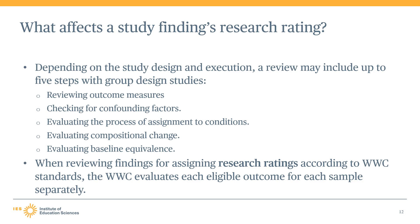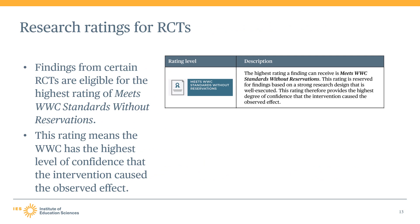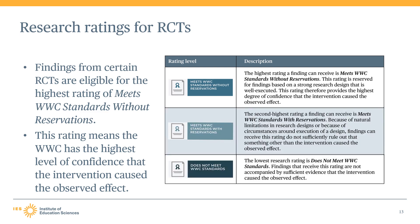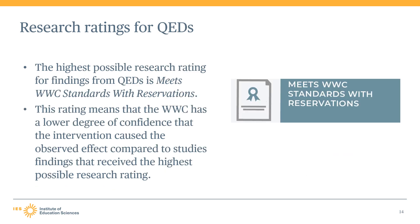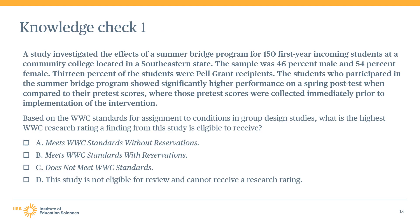When reviewing findings for assigning WWC research ratings, the WWC evaluates each eligible outcome for each sample separately. Findings from randomized controlled trials are potentially eligible to receive the highest rating of meets WWC standards without reservations. This research rating means that the WWC has the highest level of confidence that the intervention caused the observed effect, but findings from RCTs may be downgraded to lower research ratings based on characteristics and implementation of that design. For QEDs, the highest possible research rating their findings can receive is meets WWC standards with reservations, given that the non-random allocation of units to conditions means that the WWC has a lower degree of confidence that the intervention caused the observed effect.